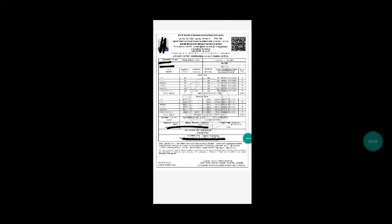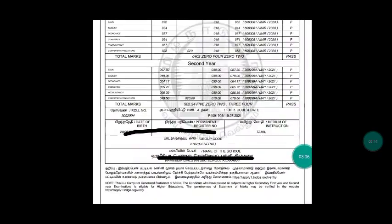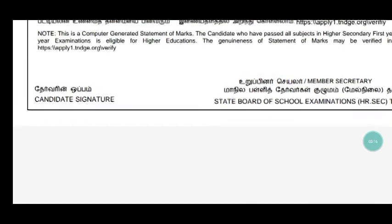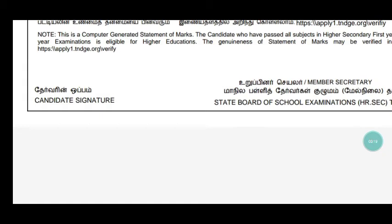You can download and print your photo and name with your register number. You can also sign your candidate signature. This is a temporary mark sheet — you can print it and use it. I will close this video here; in the next video I will meet you again. Thanks for watching.